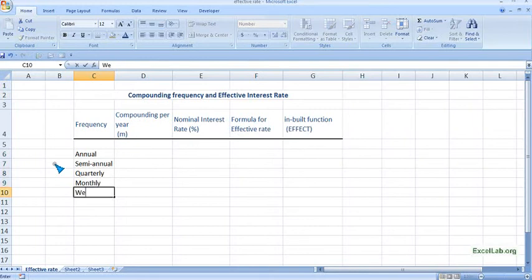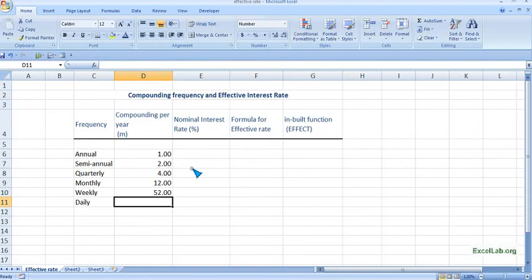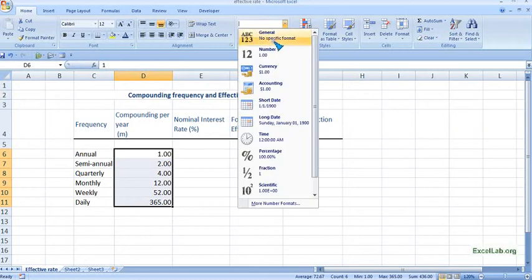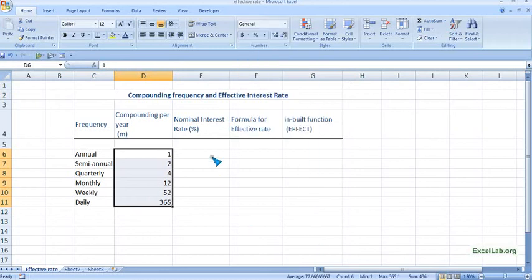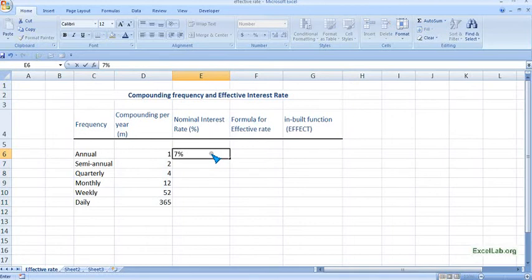Next we have monthly, weekly, and daily. For annual it is one, semi-annual is two, quarterly is four, monthly is twelve, weekly is fifty-two, and for daily it's three hundred sixty-five. Now, assuming the nominal interest rate is seven percent per annum.